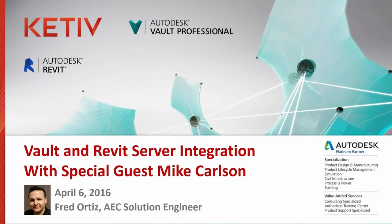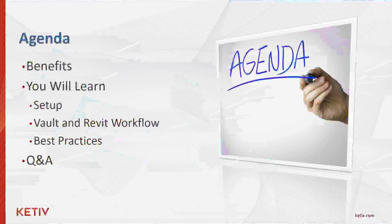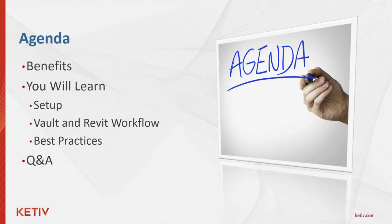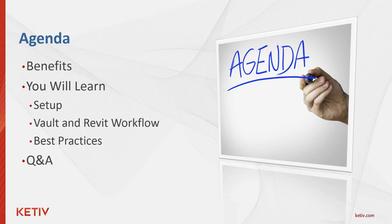Fred, why don't you tell us a little bit about our agenda for today. Sure — we'll begin by talking about the benefits of utilizing Vault in conjunction with Revit server on a Revit project. Then we'll jump into a live session covering how to add mapping for the Revit server folder and the Vault project folder, how to change Vault settings to enable Revit family indexing, and then walk through the Vault and Revit workflow including best practices for a workshared project.